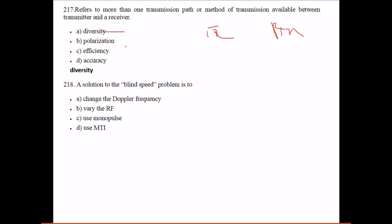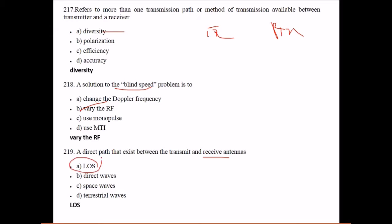A solution to the blind speed problem is to vary the radio frequency. By varying the radio frequency, you can easily get this blind speed to be avoided. The direct path that exists between transmitter and receiver antennas is line of sight, LOS.